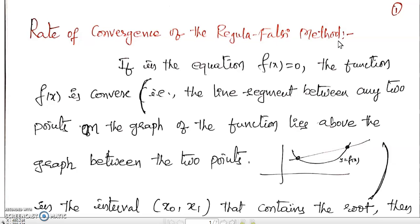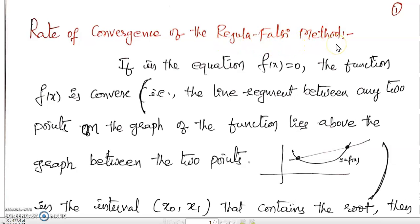Now, the secant method and regular falsi are the same, except the condition that at each iteration, we have to locate the interval in the regular falsi method, which is not done in the secant method. That is the only difference.